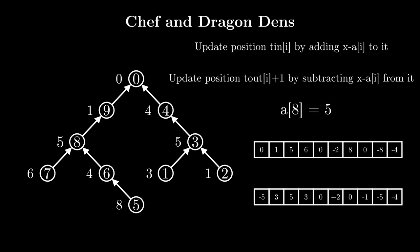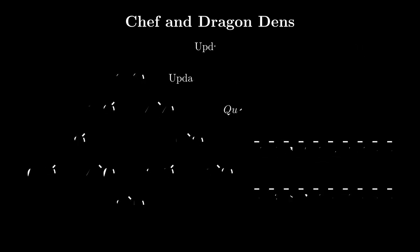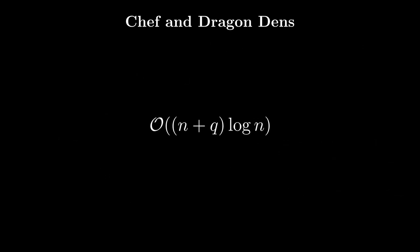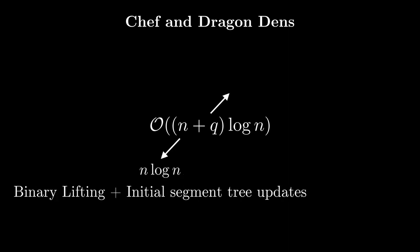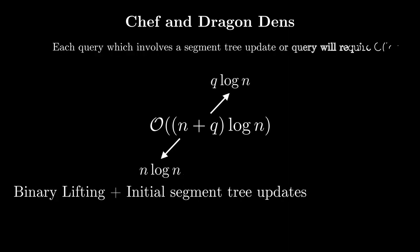For type-2 queries, after confirming that node i is an ancestor of node j, the answer is query(1, t_in[j]) minus query(1, t_in[parent(i)]), where query(a, b) is the sum of arr values from a to b. Since we created two trees, we maintain two segment trees and decide which one to query based on which tree has i as an ancestor of j. For updates, we update both segment trees. The overall complexity is O((n + q) log n) — the n log n part comes from binary lifting and initial segment tree setup, and q log n from each query or update requiring O(log n) time.